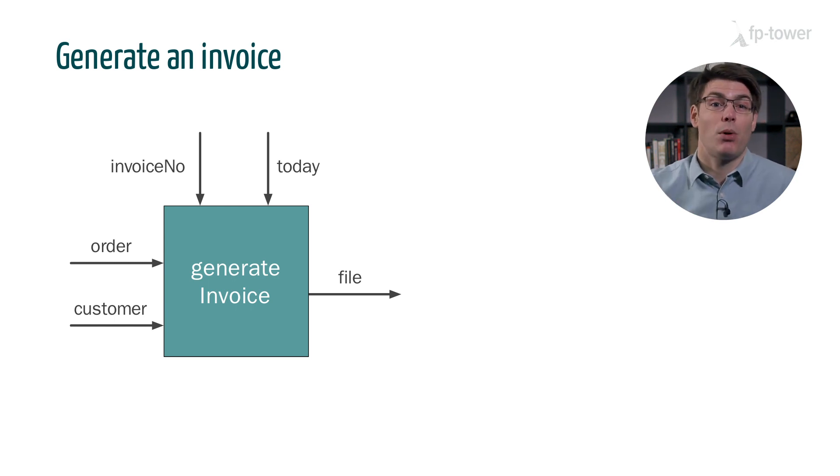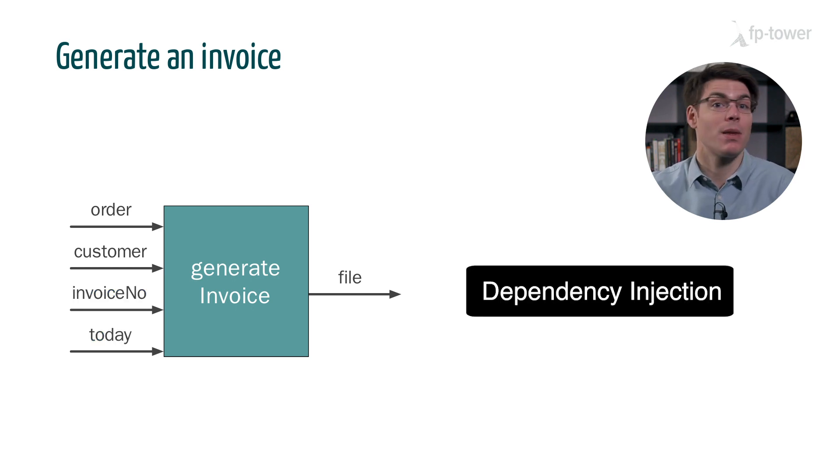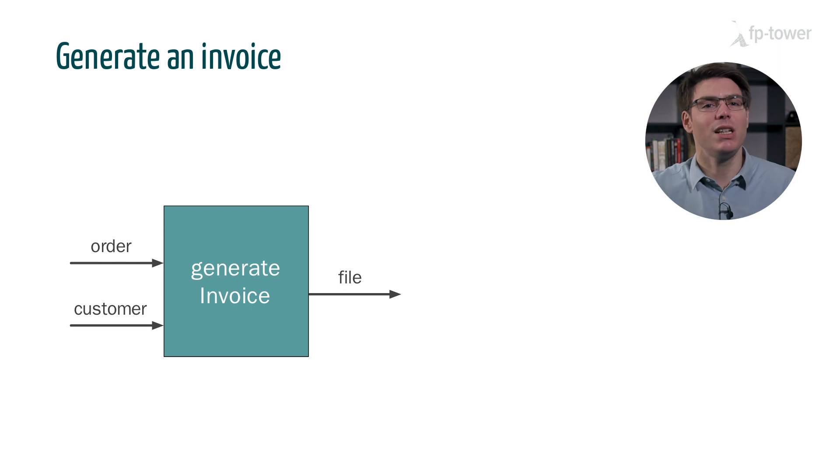The solution to this problem is well known in the programming community. If we want to test a function easily, we need to pass all its dependencies as parameters. This is called dependency injection. And in FP we don't need to think about it because all FP functions are deterministic - they cannot depend on a mutating variable or read rows from a database. So by default, all FP functions must use dependency injection. Now putting testing aside, I would like to show you another issue with the original design of generate invoice.